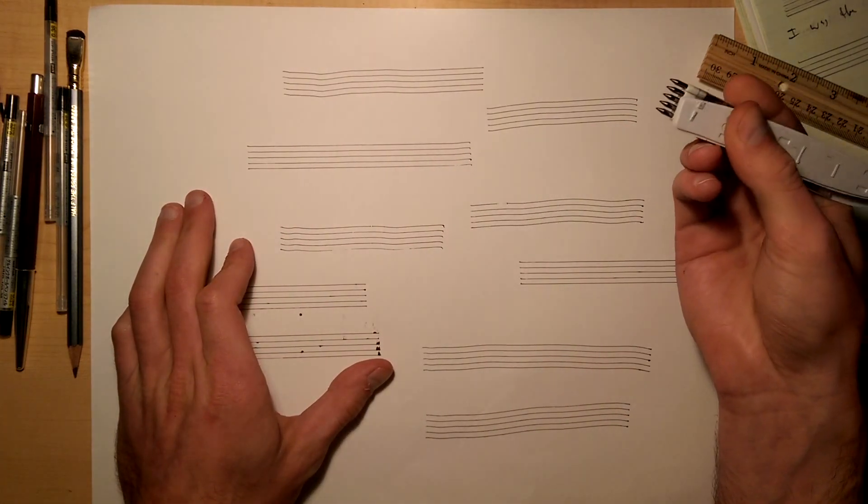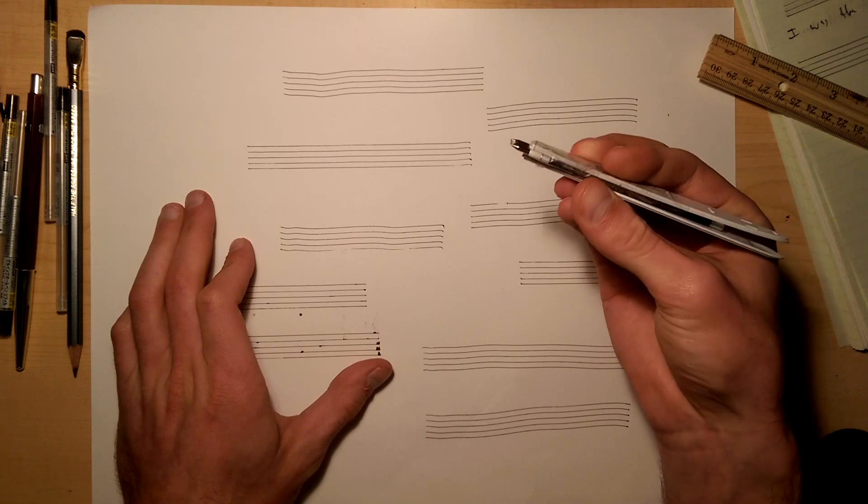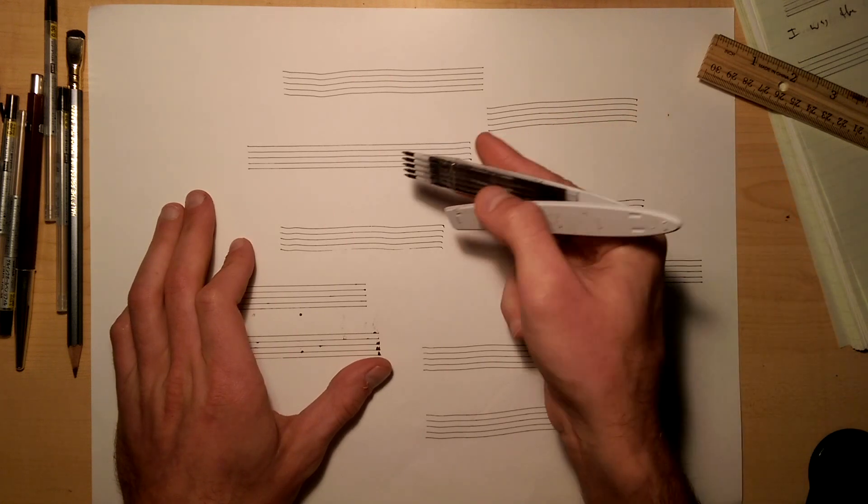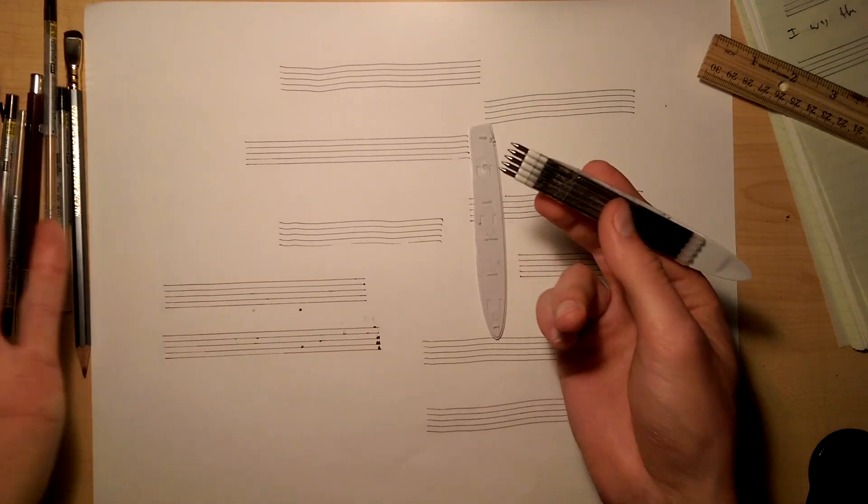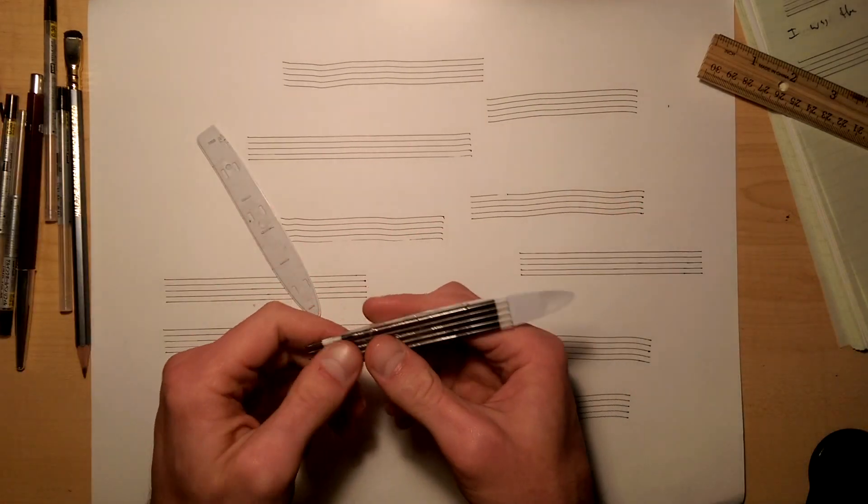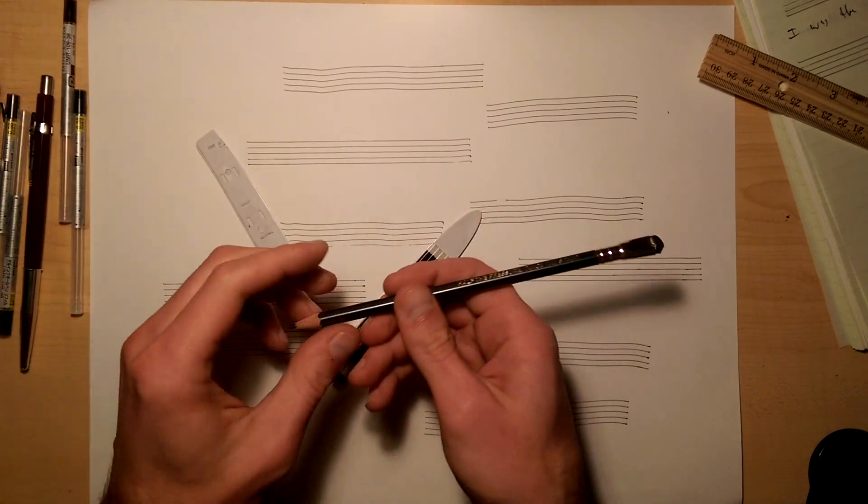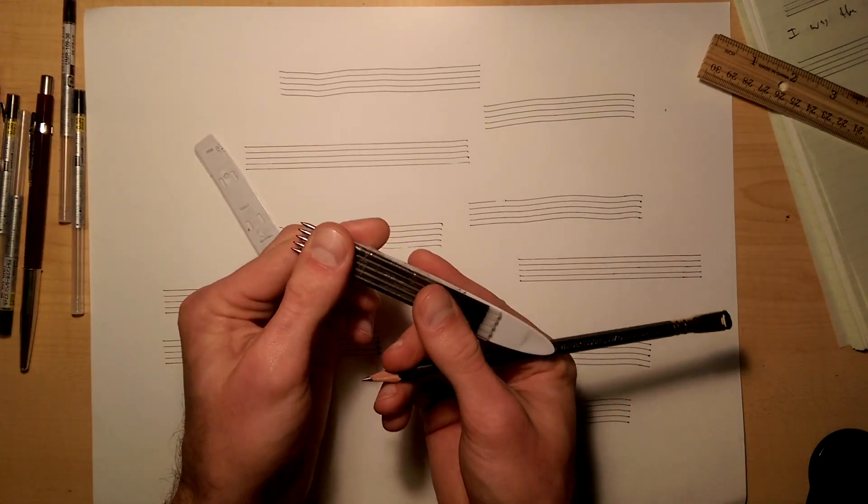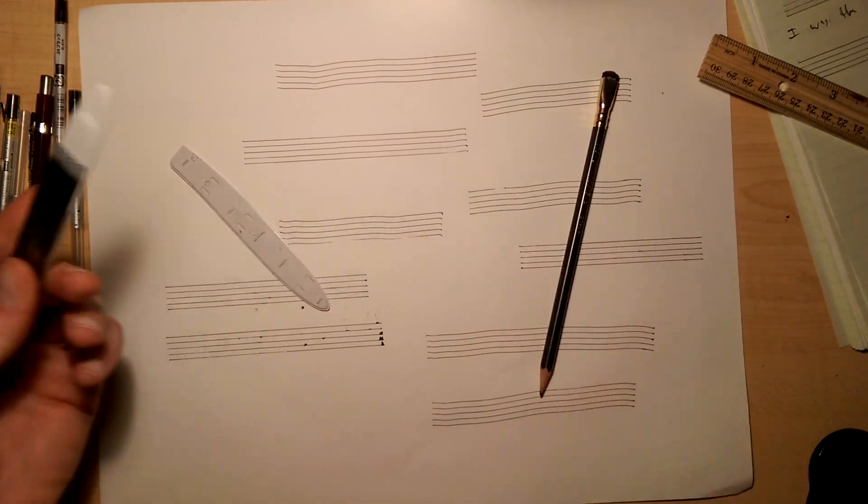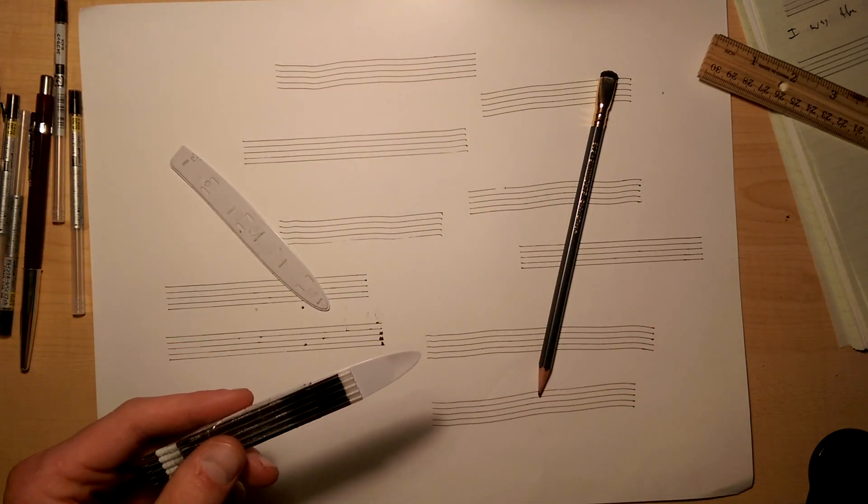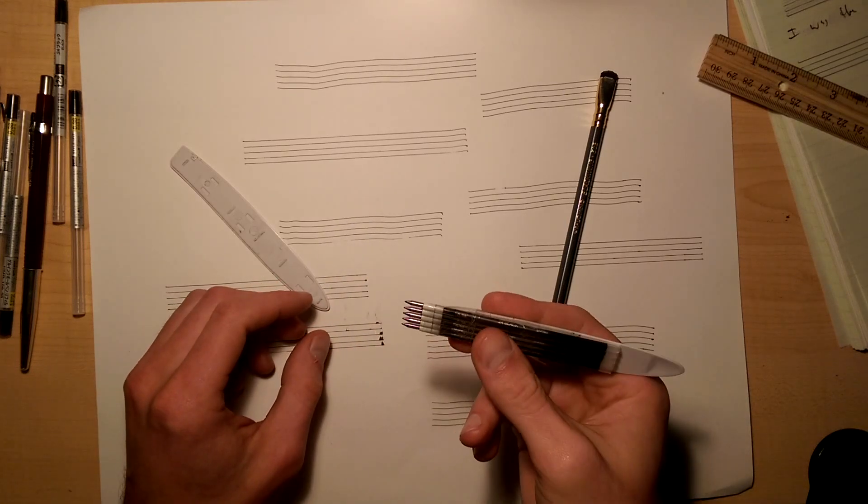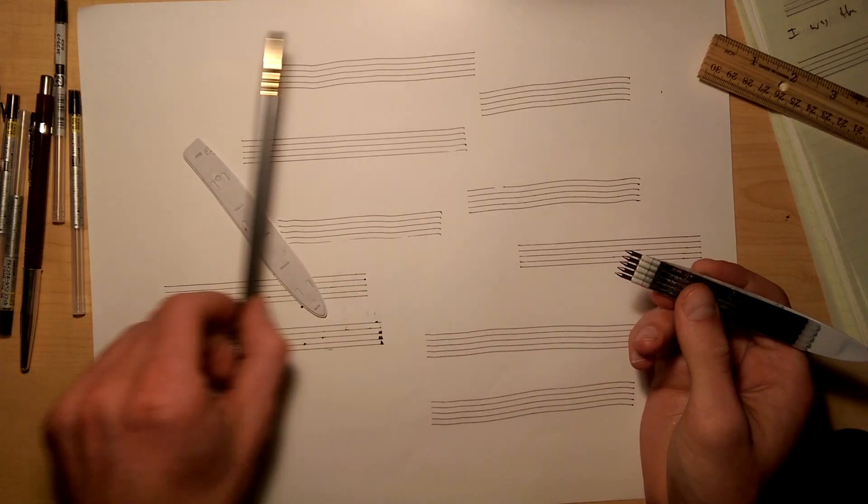But this is one of those things where it's not even the Nolagraph or the YouTubers before me. It goes back to when people originally started engraving music. Imagine a calligraphy pen, but with five points on it. And that's what they were using to make these manuscripts in the 17th and 18th century. And then they did that until proper printing came along.